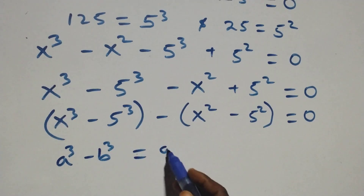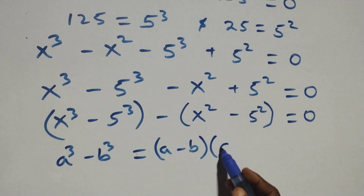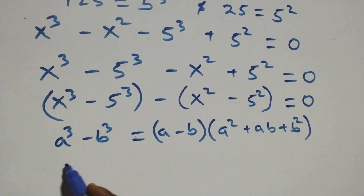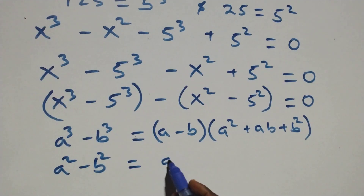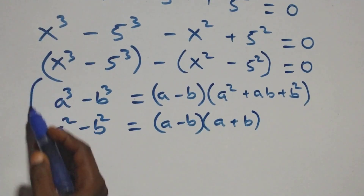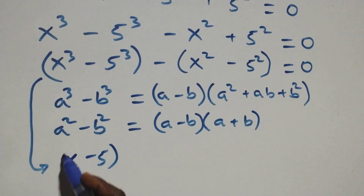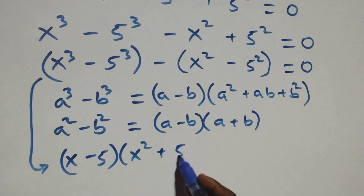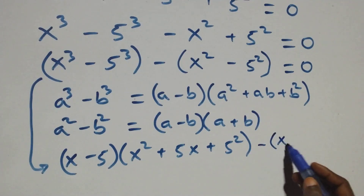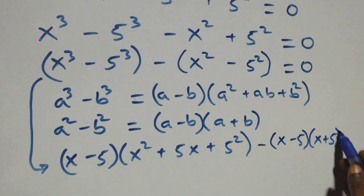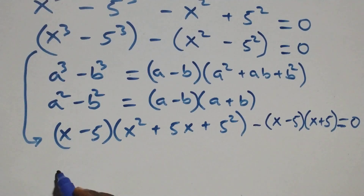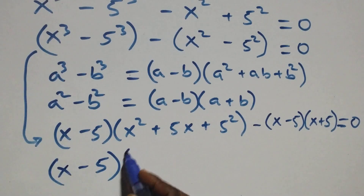This bracket follows the identity a cubed minus b cubed equals (a minus b)(a squared plus ab plus b squared). The second bracket follows a squared minus b squared equals (a minus b)(a plus b). So this equation becomes (x minus 5)(x squared plus 5x plus 25) minus (x minus 5)(x plus 5) equals 0.